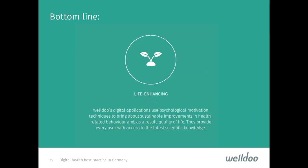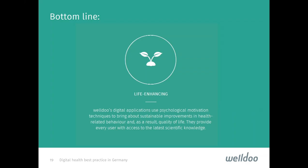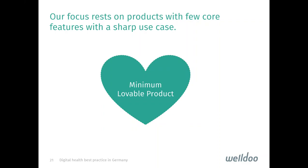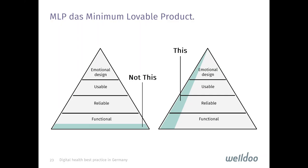To create a user-friendly digital service, you need to address all aspects of behavior change. Our services are life-enhancing — all digital applications use psychological motivation techniques to bring about sustainable improvements in health-related behavior and quality of life. They provide every user with access to the latest scientific knowledge. Our focus rests on products with few core features and a sharp use case, which we call a minimum loveable product or MLP — not a long list of features, but a few core features to start with that make the app functional, reliable, usable, and emotionally engaging.